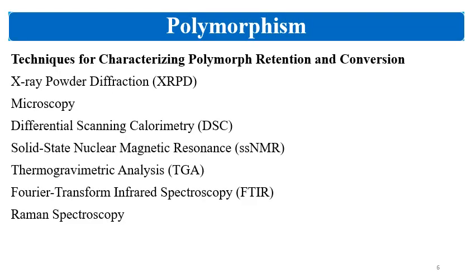You should also know the techniques to detect polymorph retention and conversion — to characterize whether a formulation is showing polymorph conversion or retaining the original polymorph. XRD (X-ray powder diffraction) is a well-known technique used to characterize polymorphs. Microscopy, including third-stage microscopy, is also used. DSC measures the effect of temperature on the behavior of different polymorphs. Solid-state nuclear magnetic resonance (ssNMR), thermogravimetric analysis (TGA), FTIR, and Raman spectroscopy are also used to detect different polymorphs.